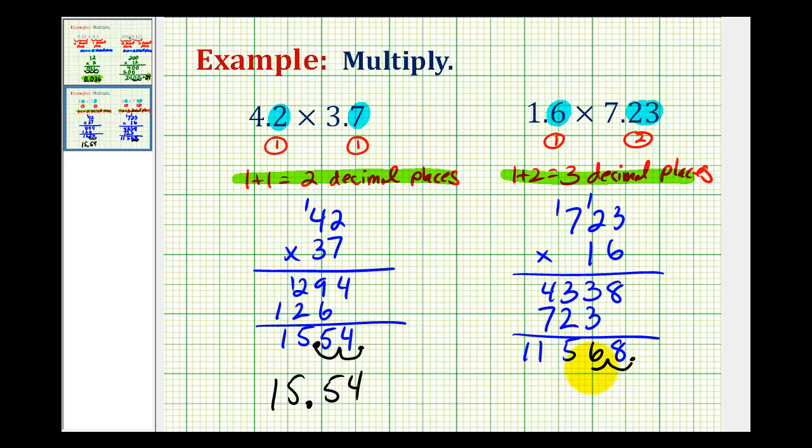So we have one, two, three. So the product of the given problem containing decimals would be eleven point five six eight or eleven and five hundred sixty-eight thousandths.